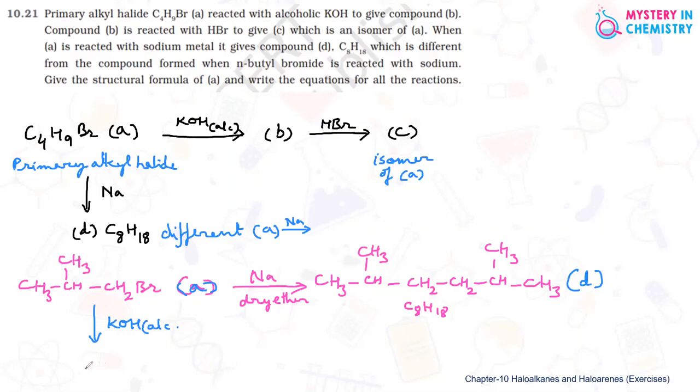So this alkene must be CH3-CH(CH3)-CH=CH2. This hydrogen here, double bond CH2. This compound should be compound B. So B is the result of alcoholic KOH reaction.